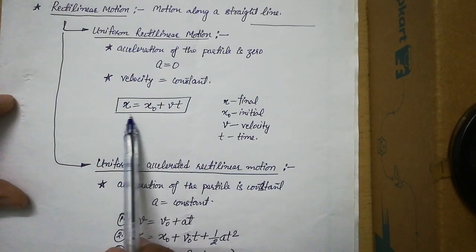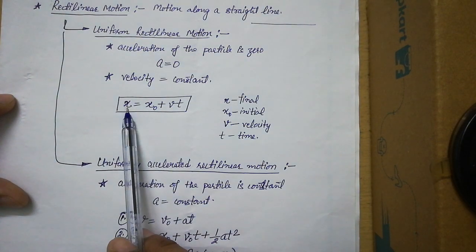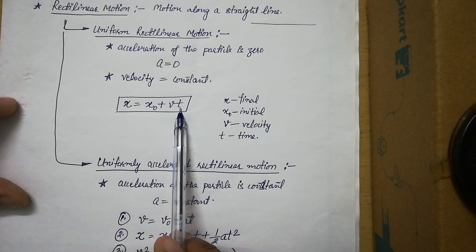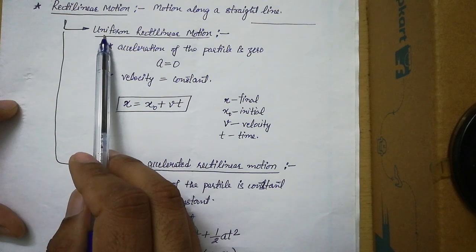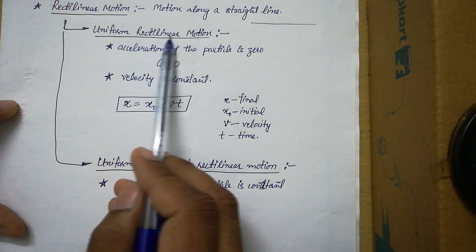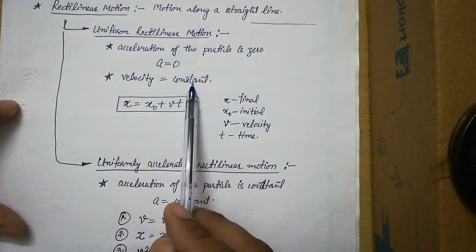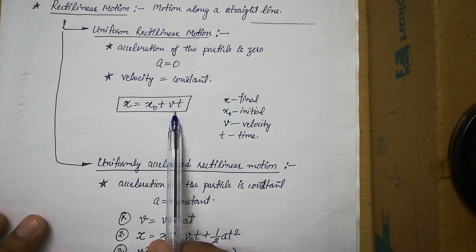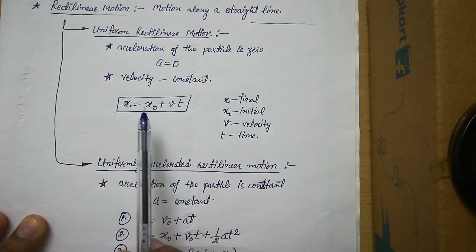Under uniform rectilinear motion we get one equation: x = x₀ + vt, where x is the final distance, x₀ is the initial distance, v is the velocity of the particle, and t is the time in seconds. So if a problem states the particle is moving with uniform rectilinear motion, acceleration is zero and velocity is constant — only this one equation is applicable for that problem.